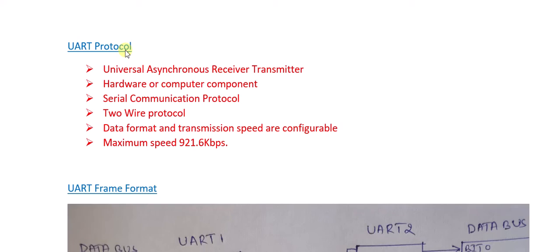UART stands for Universal Asynchronous Receiver and Transmitter. It is called 'universal' because it is used in most microprocessors and microcontrollers. 'Asynchronous' means no clock pulses are used to transmit data. 'Receiver and Transmitter' means UART hardware has both a receiver and a transmitter. So UART is Universal Asynchronous Receiver Transmitter — that is the naming of UART protocol.